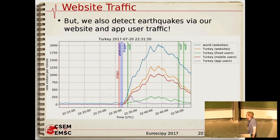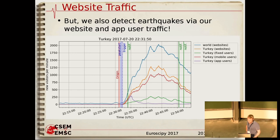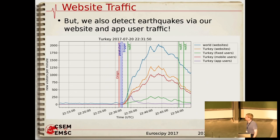We've known for many years that we can also detect earthquakes when, after certain earthquakes, people come to our website. We initially discovered this the hard way when our servers struggled and we had a denial of service. We've instrumented our servers to tell us very accurately when we have new visitors. This was an earthquake in July in Turkey — magnitude 6.6 — and you can see that within a couple of minutes we're getting significant visitors on our website and people opening our app. We actually detect that peak within a minute or so.